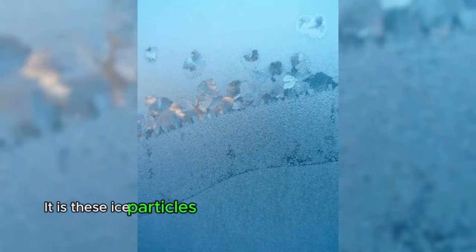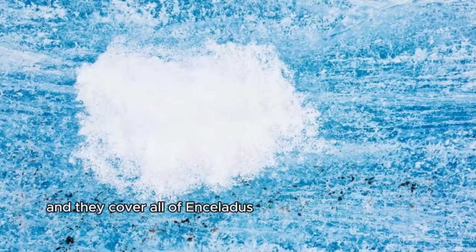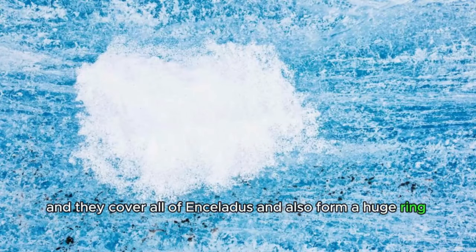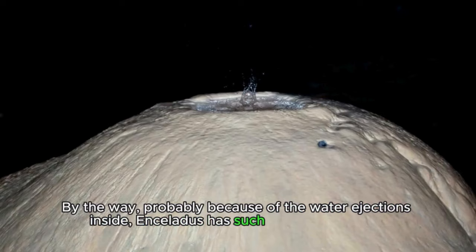It is these ice particles that fly out of the ocean depths at a speed of 800 miles per hour. And they cover all of Enceladus and also form a huge ring for Saturn. By the way, probably because of the water ejections inside, Enceladus has such a smooth surface.